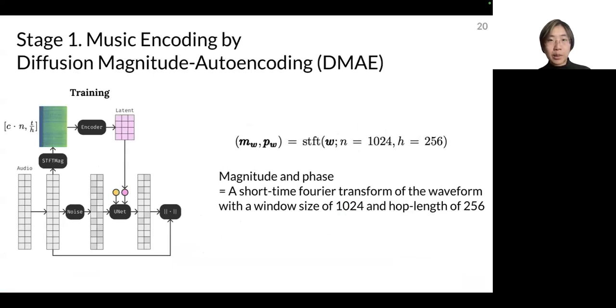So chaining all of these little modules, we build our model by two stages, where the first stage is about encoding the music by diffusion magnitude audio auto-encoding, DMAE in our paper. So here, what we have is that we have audio signal as input, and then we construct its magnitude and phase by our short-time Fourier transform of the waveform, with a window size of 1024, and a hop length of 256.